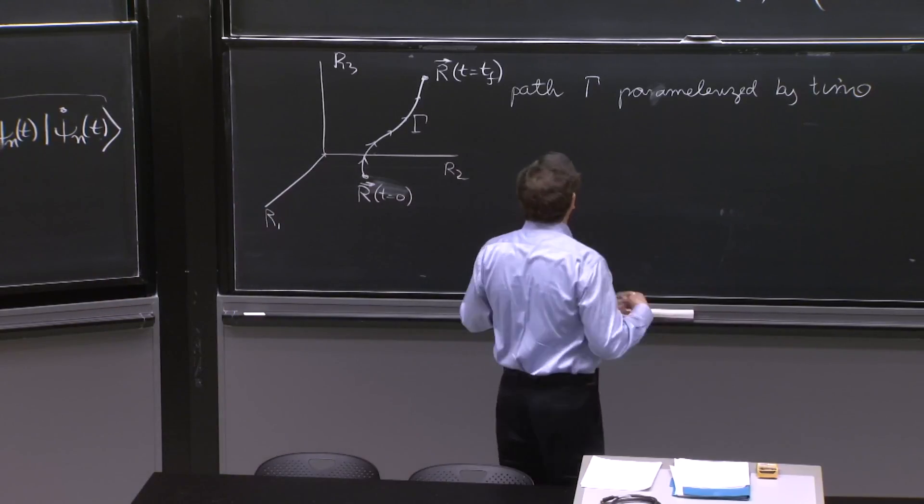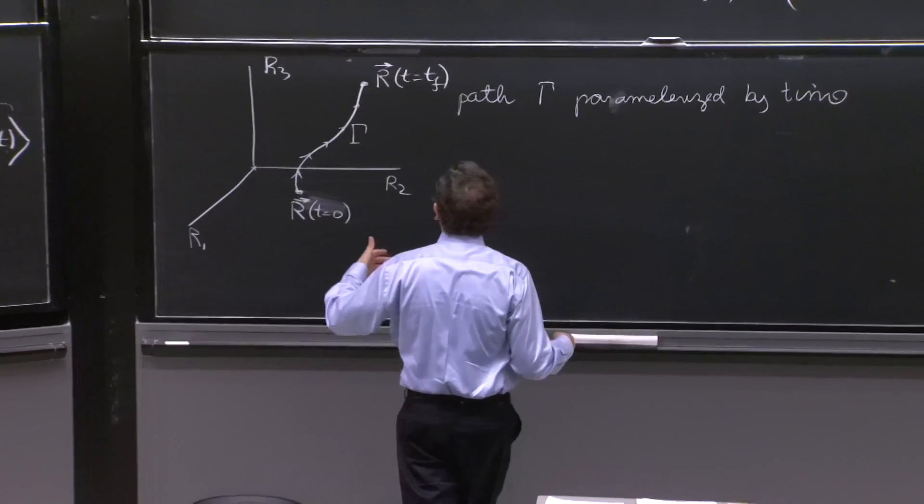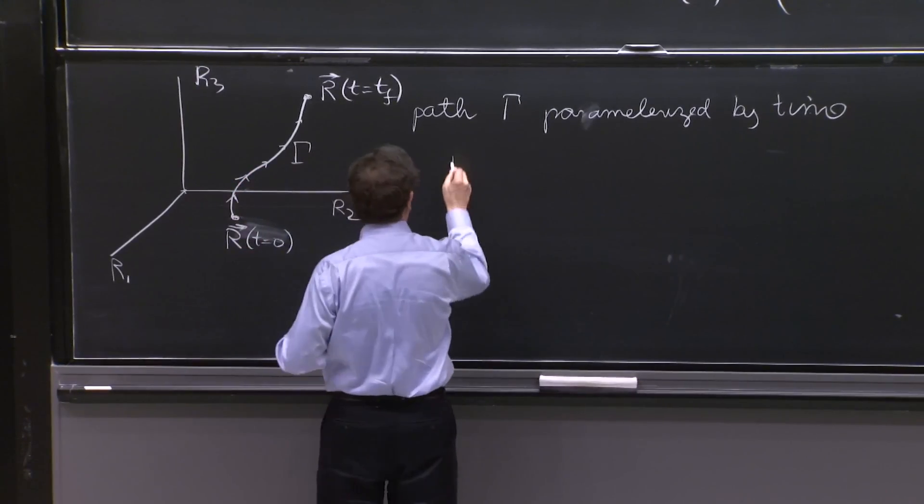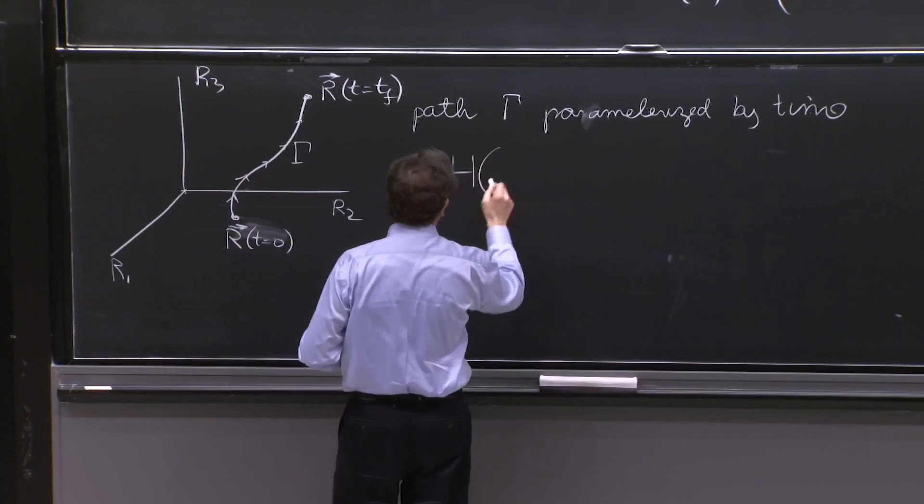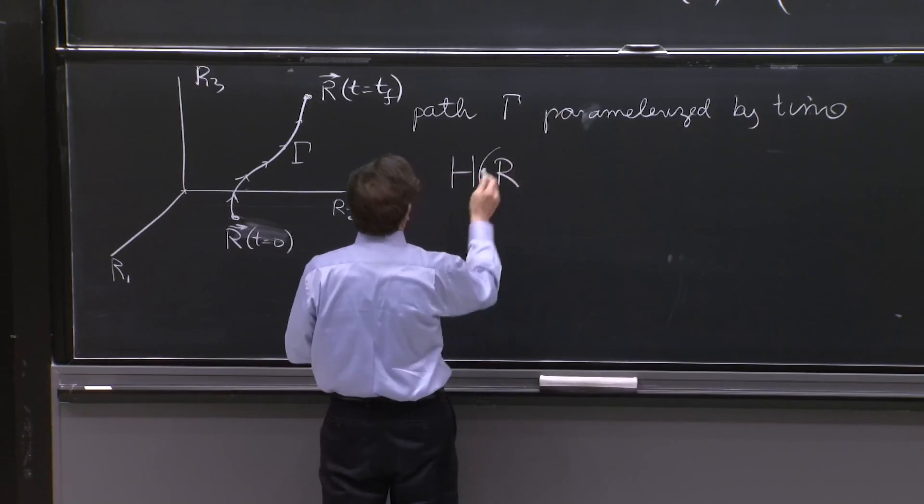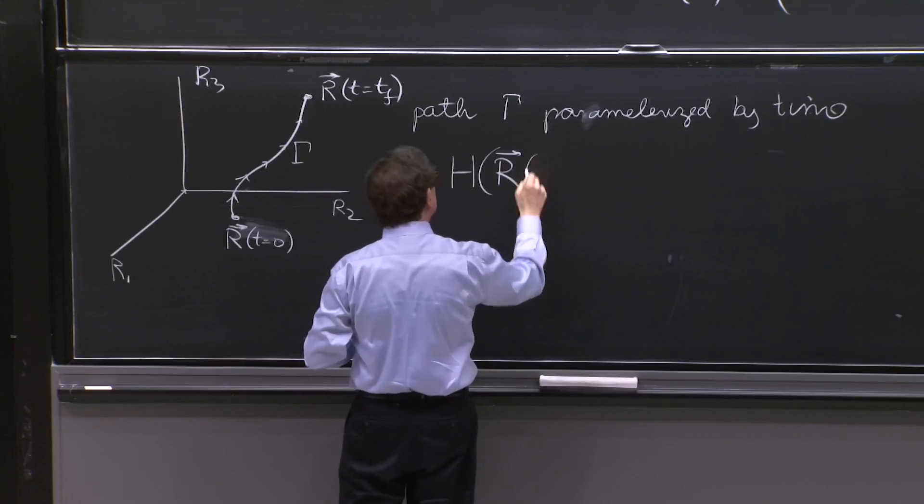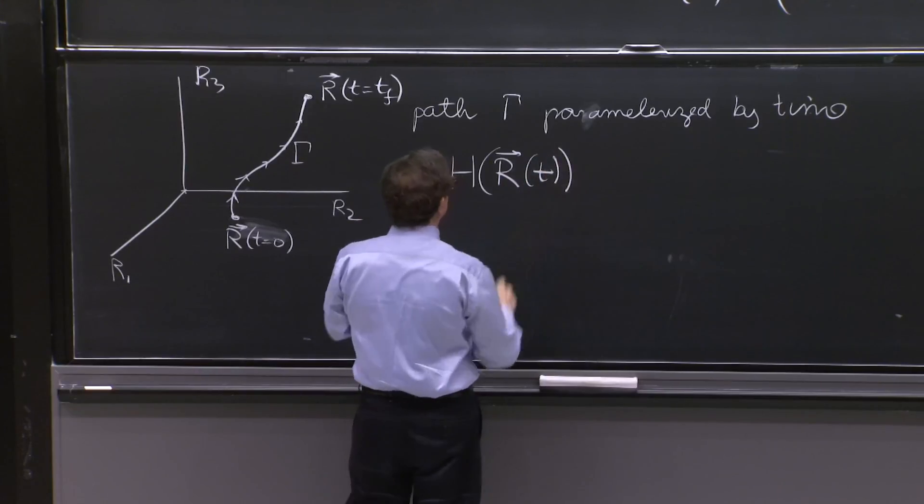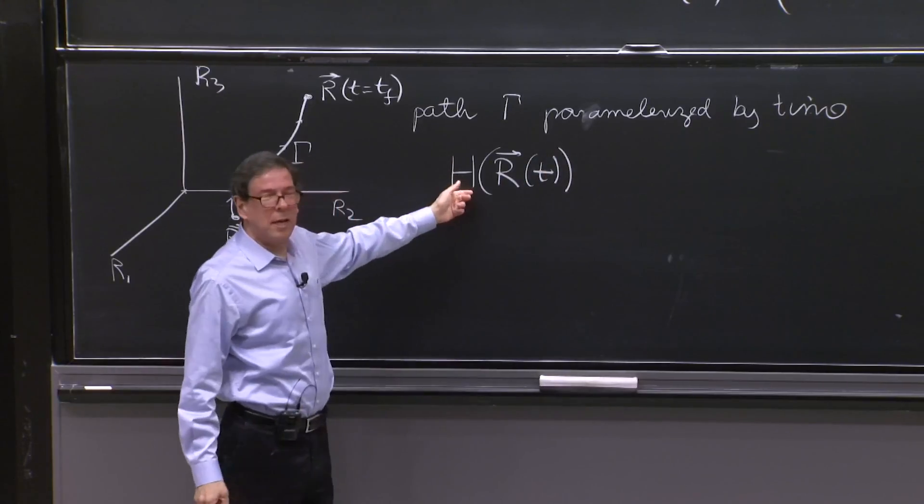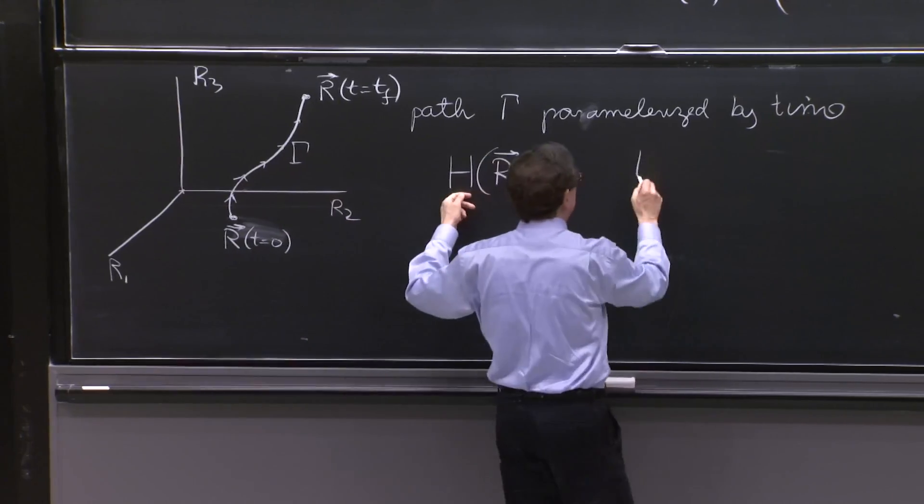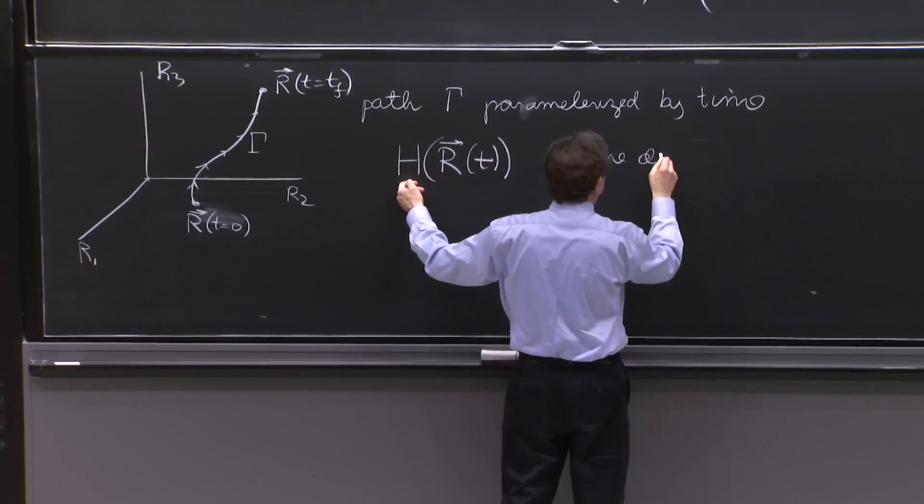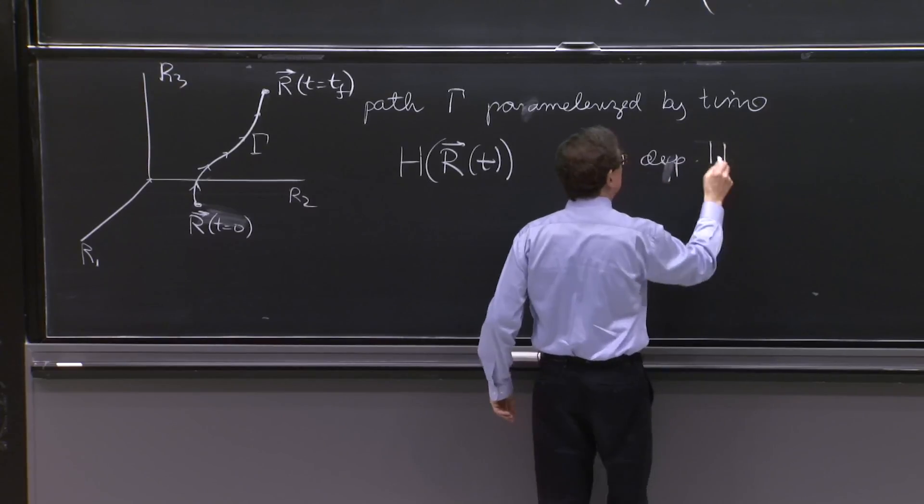And we now have a set, not a set, a time dependent Hamiltonian. Because while h was a function of r from the beginning, now r is a function of time. So this is your new Hamiltonian. And this is time dependent, dependent Hamiltonian.